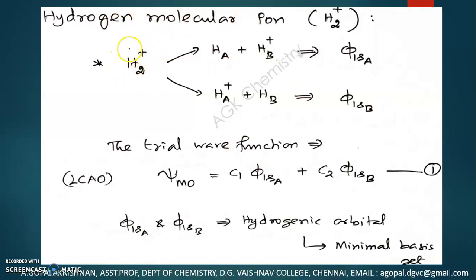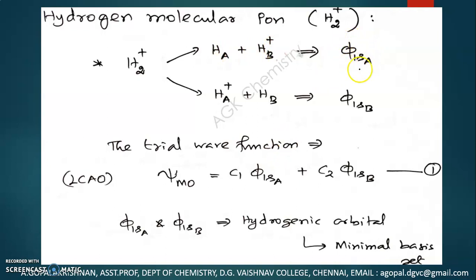This hydrogen molecular ion can be assumed like this: suppose you take a hydrogen atom and one proton — I will represent this as H_A and H⁺_B. That one electron is present with atom A now, and the second nucleus is free. When the two are far away, we can write the trial wave function as φ₁ₛ_A, because the electron is associated with nucleus A. Similarly, we have another possible situation where the trial wave function is φ₁ₛ_B.